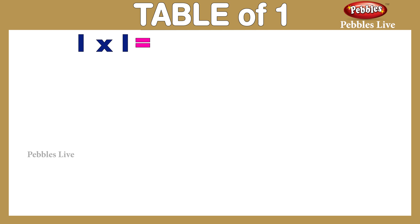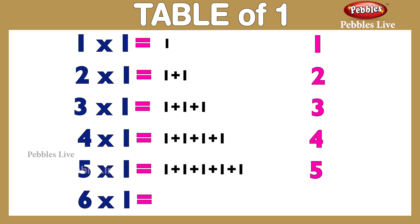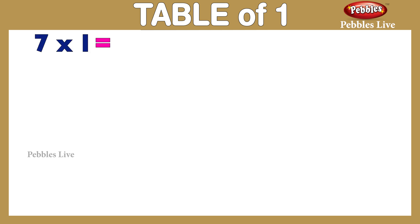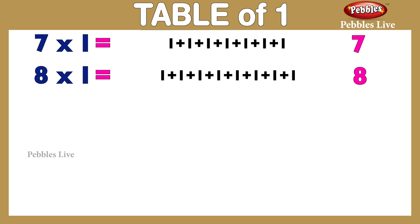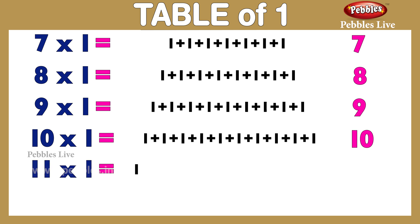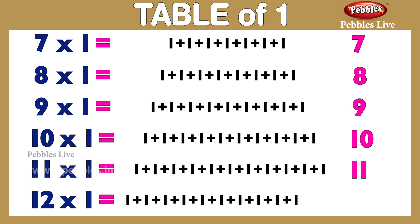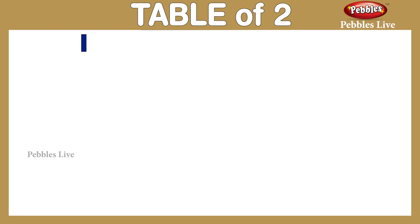Pebbles live. Table of 1: 1 one is 1, 2 ones are 2, 3 ones are 3, 4 ones are 4, 5 ones are 5, 6 ones are 6, 7 ones are 7, 8 ones are 8, 9 ones are 9, 10 ones are 10, 11 ones are 11, 12 ones are 12.